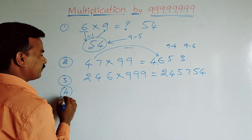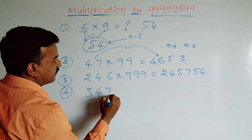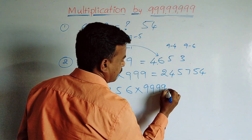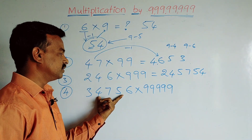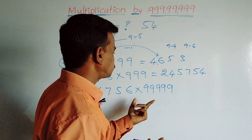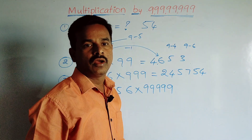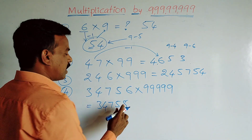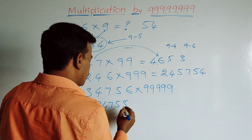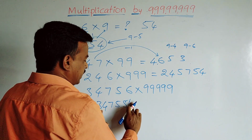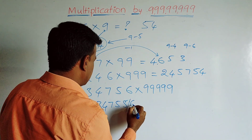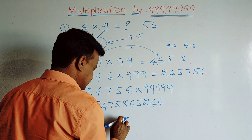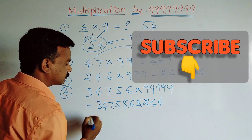One more example: 34756 × 99999. There are 5 digits in the multiplicand and 5 nines in the multiplier, so we can use this trick. Subtract 1: 34756 minus 1 equals 34755. Then subtract each digit from 9: 9 minus 3 equals 6, 9 minus 4 equals 5, 9 minus 7 equals 2, 9 minus 5 equals 4. So the answer is 3475565244.